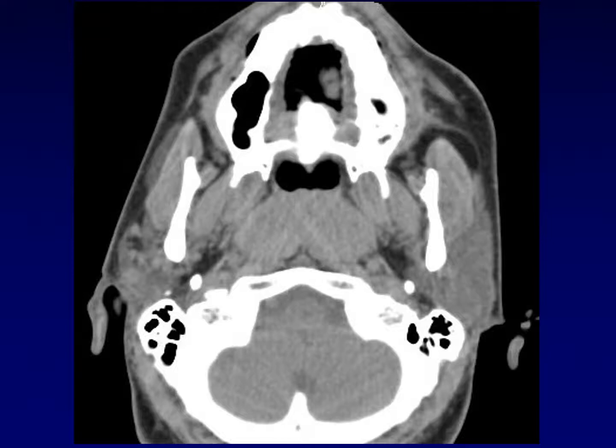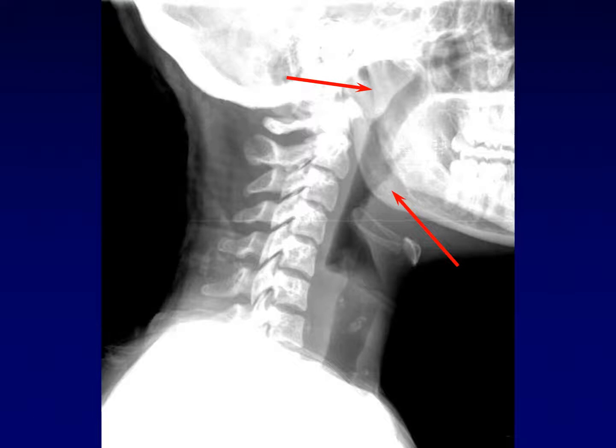Here's an example of someone who has marked enlargement of all of Waldeyer's ring. The example we're showing here is the adenoids, which are completely filling the nasopharynx — way too large for an adult. This happens to be an adult with HIV, and this is an example of how HIV enlarges all of the tissue within Waldeyer's ring.